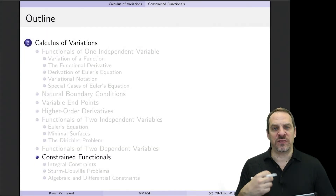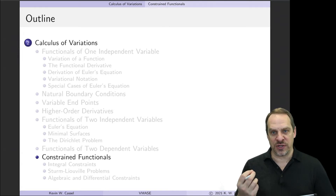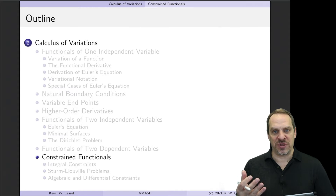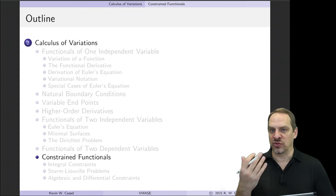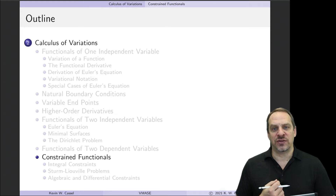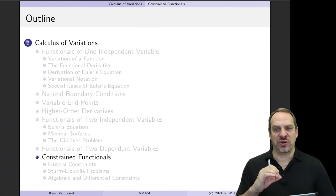So far in this chapter, we're looking at functionals with one or two independent variables, one or more dependent variables. We've looked at different types of boundary conditions, including natural boundary conditions and dual functionals. We've looked at functionals that involve higher order derivatives. Our last situation that we need to address is the case where we have a functional that's subject to a constraint.